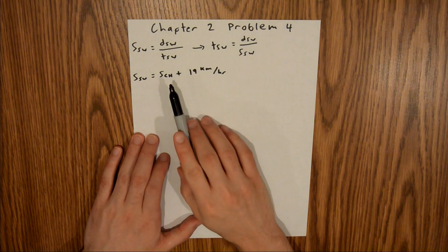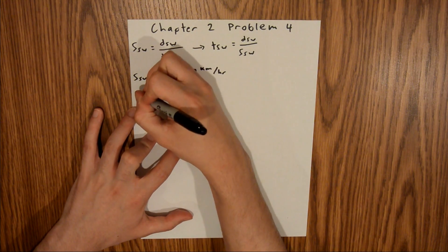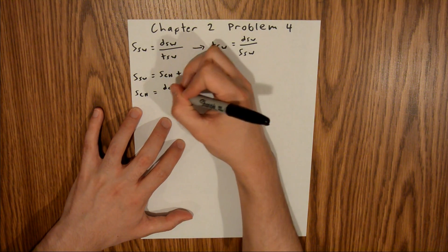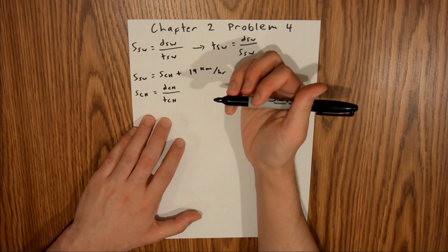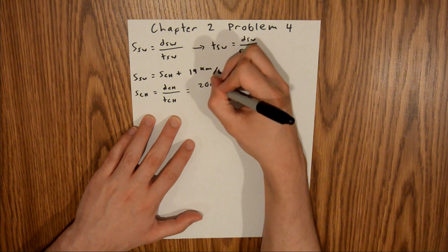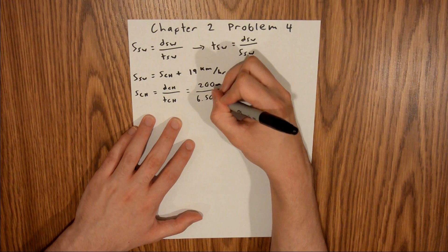How do we get the speed of CH? The speed of CH is equal to the distance of CH over the time of CH. We are given both of those in the problem, so we can plug those directly in. This is equal to 200 meters over 6.509 seconds.